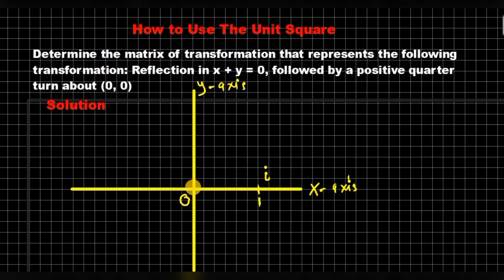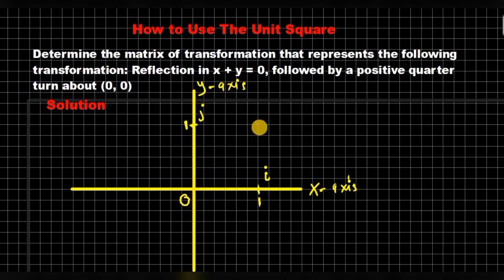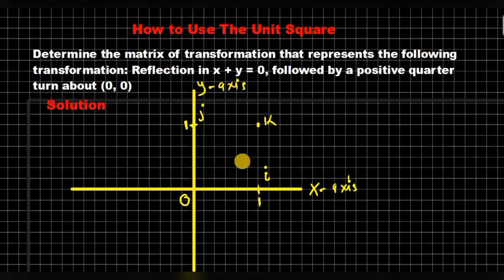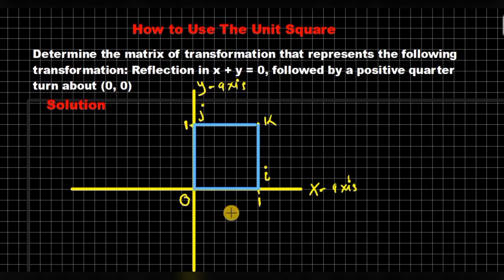Similarly, we may have on the y-axis this point — let's call it j. The point is a unit away from the origin, and in order to complete the unit square, we may have another point here. Let's call it k, so that if we complete by joining the vertices, we have the unit square.